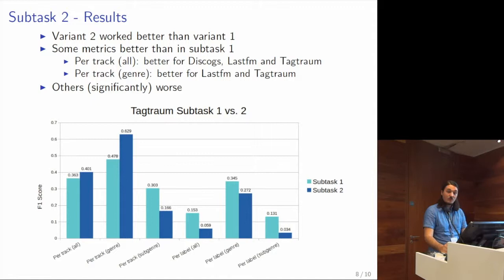Compared to subtask one, we can see that we did better in some metrics but significantly worse in others. We have a visualization here showing the best runs for subtask one and subtask two compared to each other on test set. For example, per-track genre, we did better, quite better. But for example, for per-label sub-genre, we did significantly worse.